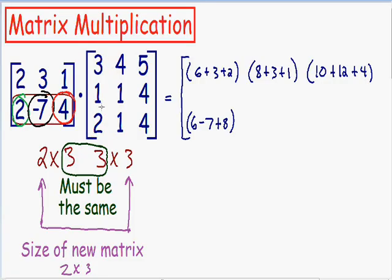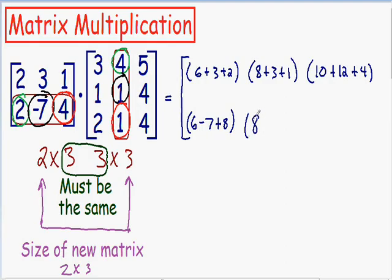Now we need to do the same thing with the second column. I'm going to put a box around the second column, and once again circle the first number in green, the second in black, and the third in red. Multiplying the green numbers: 2 times 4 is positive 8. The black numbers: negative 7 times 1 is negative 7. The red numbers: 4 times 1 is positive 4. Now we have multiplied the second row by the second column.